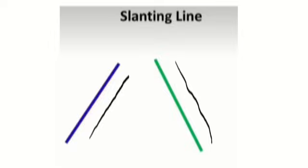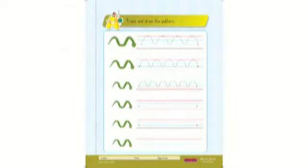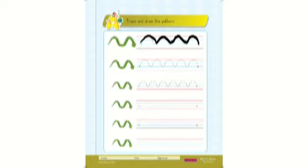Very good. Now today, teacher is going to show you a new pattern. So see this new pattern. This is a wave pattern. Now let us try to trace this pattern. Put your pencil in the green dot, making a curve, and finally reach to the red dot.